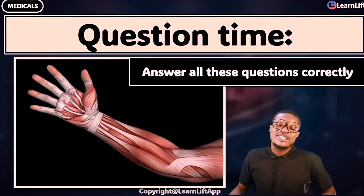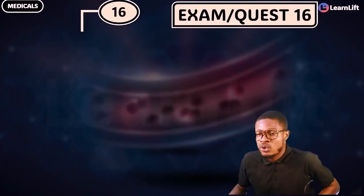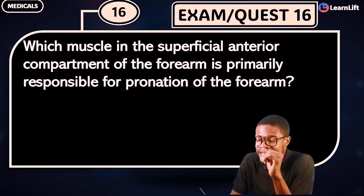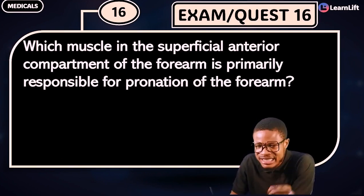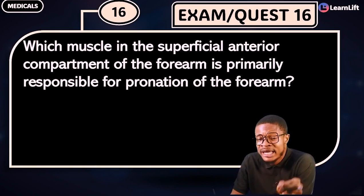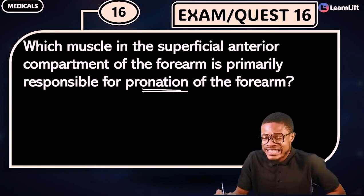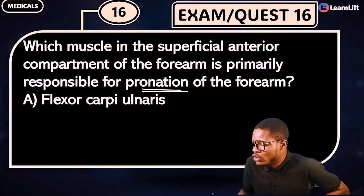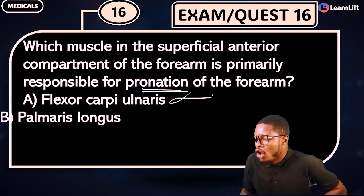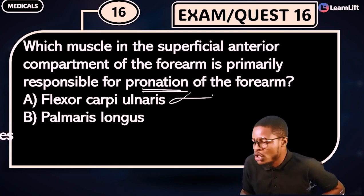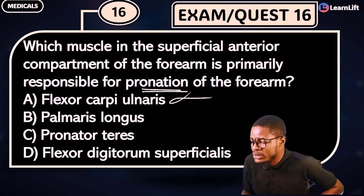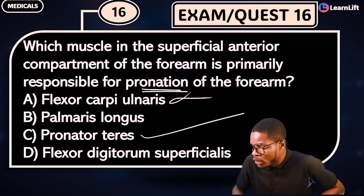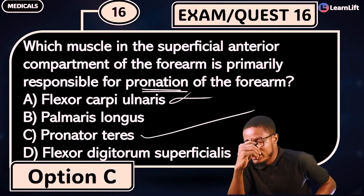Question 16: Which muscle in the superficial anterior compartment of the forearm is primarily responsible for pronation of the forearm? Option A: Flexor Carpi Ulnaris. Option B: Palmaris Longus. Option C: Pronator Teres. Option D: Flexor digitorum. The answer is of course Option C — Pronator Teres — easy and direct.